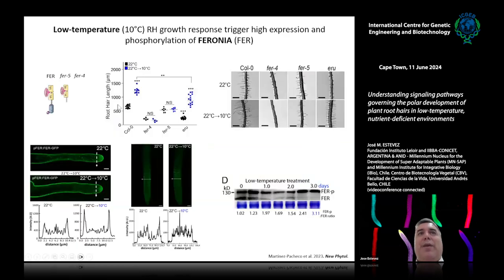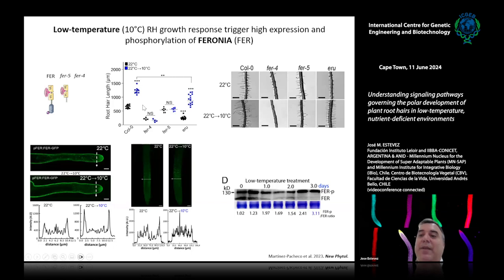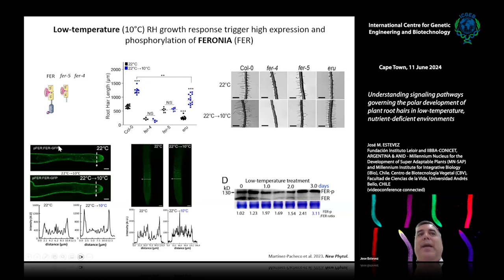We then studied this process at low temperature. The Feronia knockout mutant shows no response at all to low temperature. A Feronia mutant retaining only the extracellular domain but lacking the kinase domain is also unable to respond to low temperature. But ERULUS, which is close in sequence to Feronia, is able to respond almost like wild type. This tells us the process is specifically regulated by Feronia and not ERULUS — it is something specific, not redundant between the two receptors.